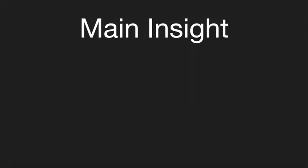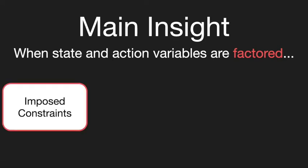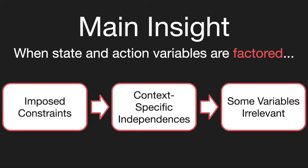Our main insight is that we can automatically reap additional benefits by learning to impose constraints. When state and action variables are factored, imposing constraints induces context-specific independences, rendering some variables irrelevant to the task. These irrelevant variables can be ignored for faster planning.